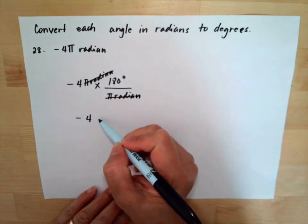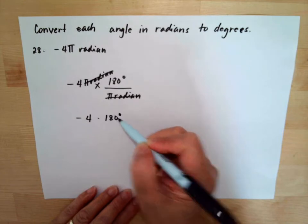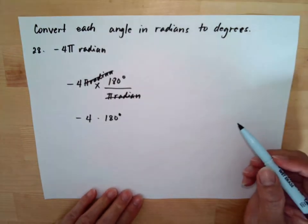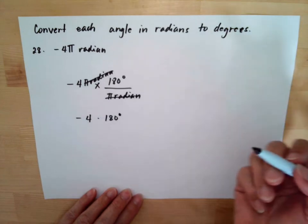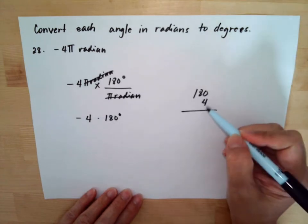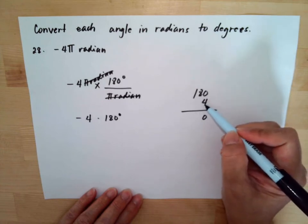So we have negative 4 multiplied by 180 degrees. So here we don't need to factor out because we have a whole number and there's no denominator. So we have 180 multiplied by 4.